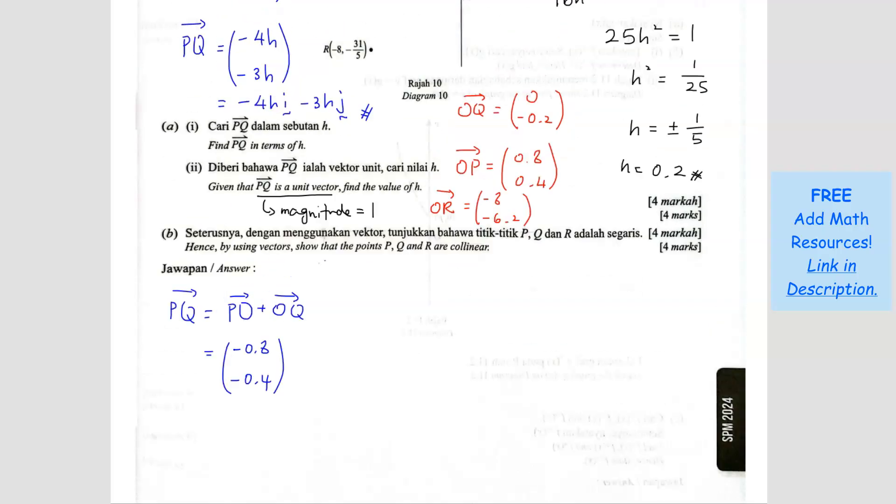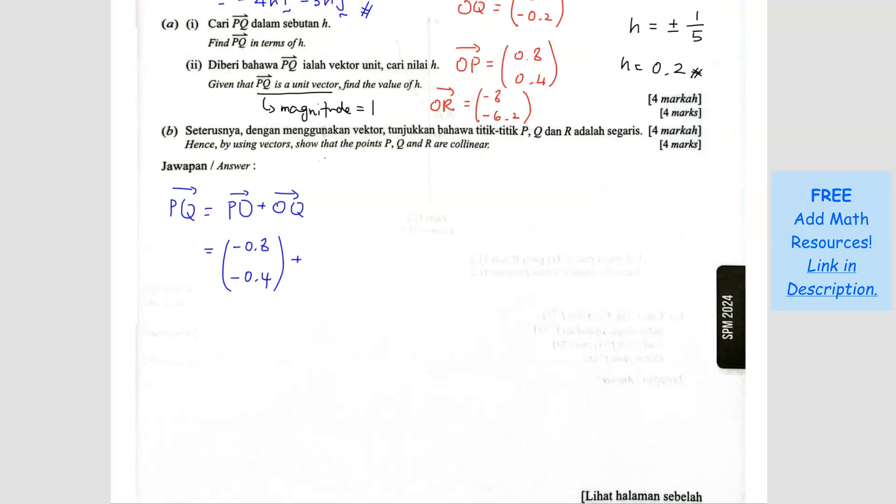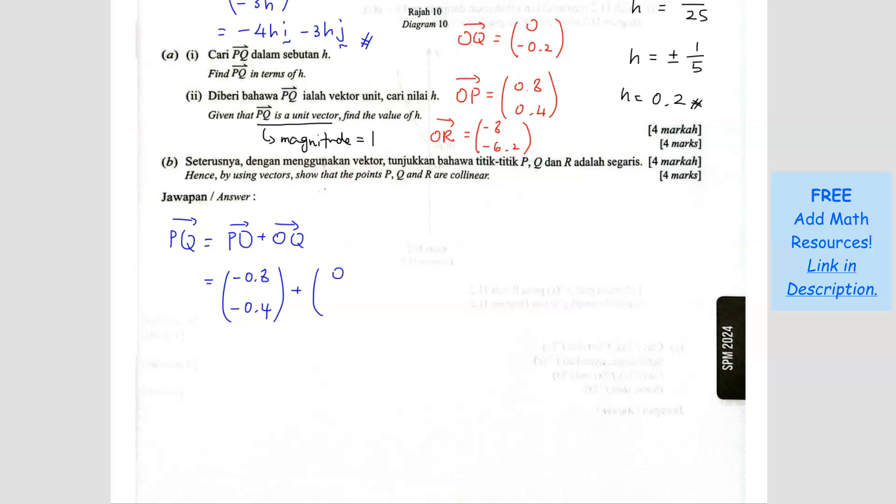Let us do this. So we can do the first combination is PQ and the second combination is QR. So we do PQ first. PQ is PO plus OQ. So PO is negative 0.8 and negative 0.4. You know what? Actually, we don't have to do this. Because we already have PQ up here. We can just substitute the H into this and get the answer. But never mind. Since I'm already doing it, I'm just going to do it. Plus OQ is 0 and negative 0.2. So what I will get is negative 0.8 and negative 0.6. So if I write in IJ form is negative 0.8i minus 0.6j. So this is your PQ.